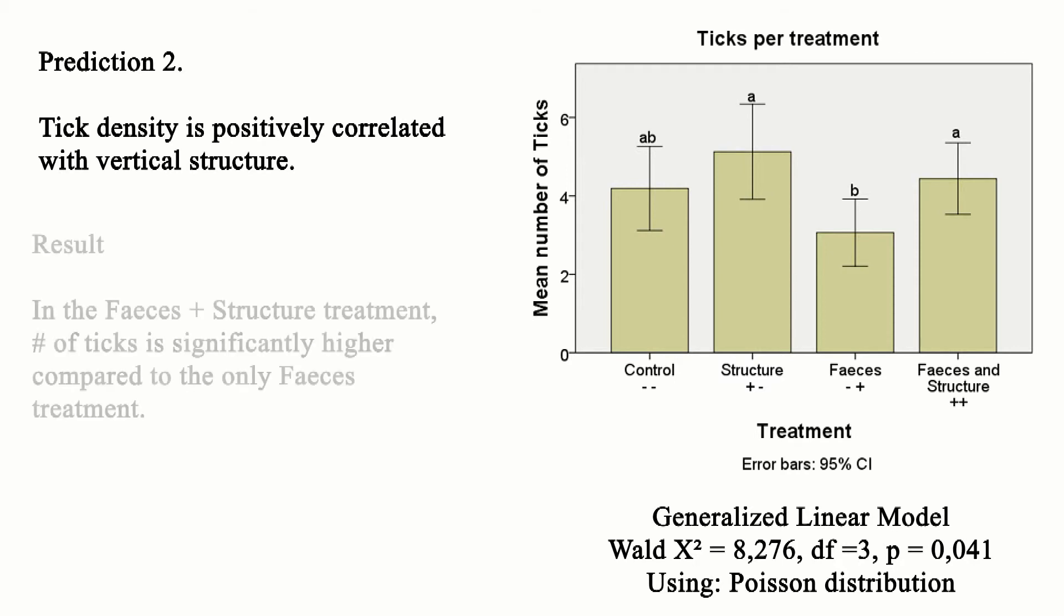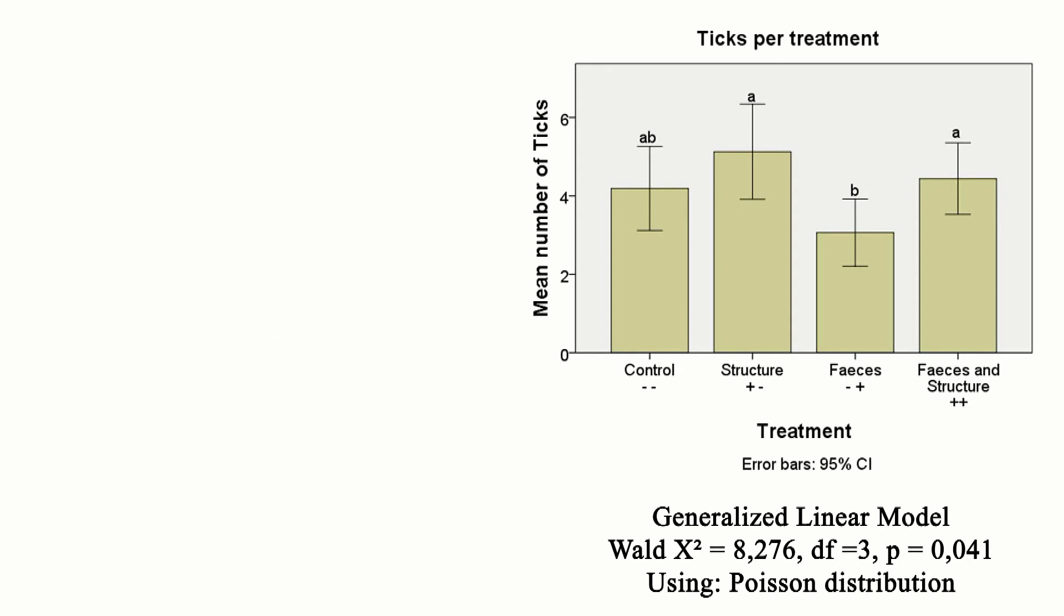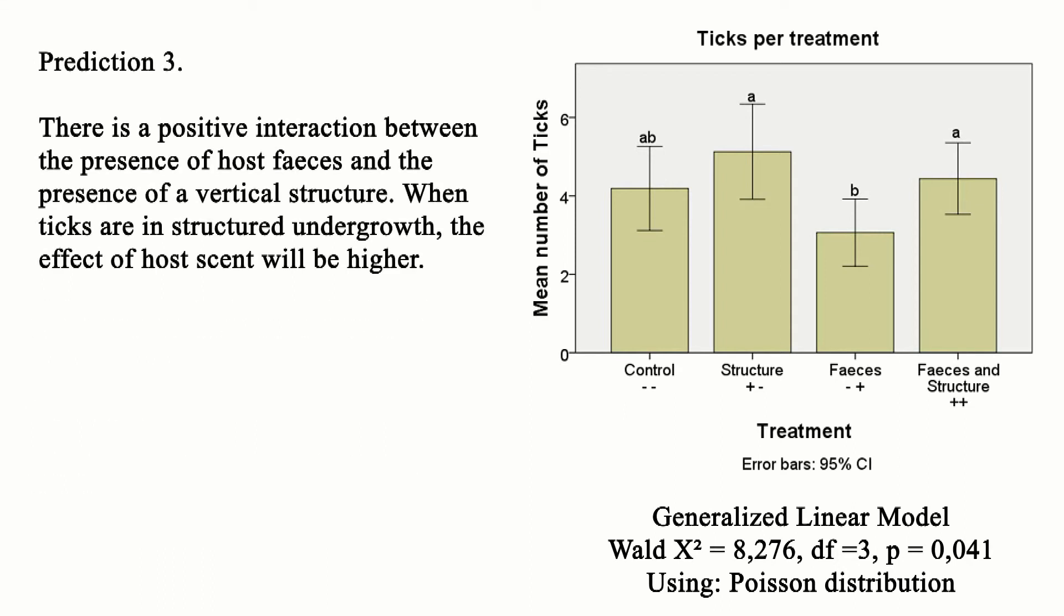For the compartments with feces, the compartment with structure contained a significantly higher mean number of nymphs when compared to the compartment with only feces. For the compartments without feces, this was not found. There is no significant difference between the control and the compartment with structure. The third prediction regarding the interaction effect cannot be confirmed.